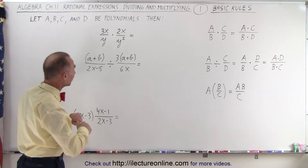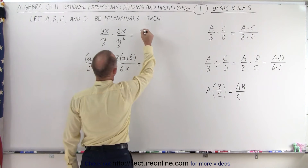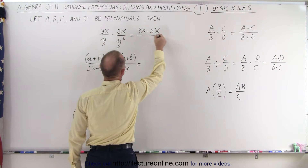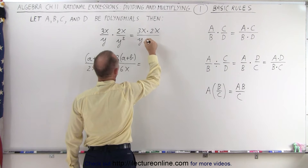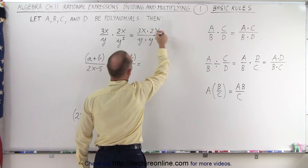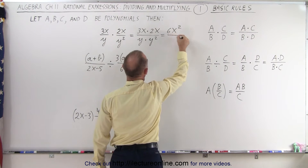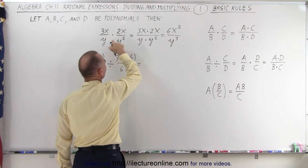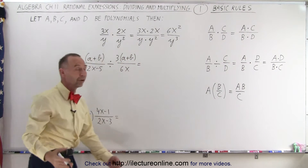Now we're going to do a few examples. This can be written as 3x multiplied times 2x in the numerator, and in the denominator y multiplied times y squared. If we work this out, that would be 6x squared divided by y cubed. So this can simply be written as that — very straightforward.